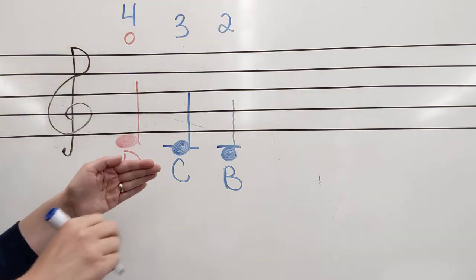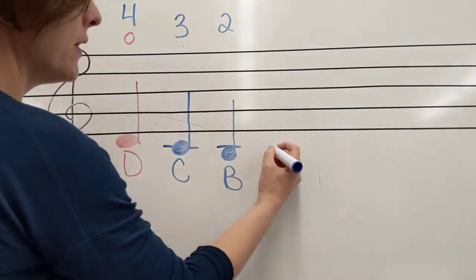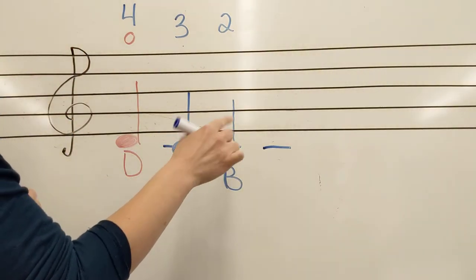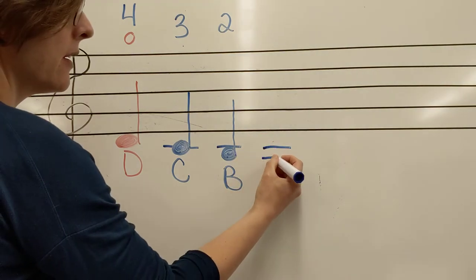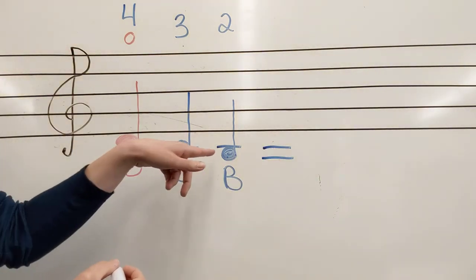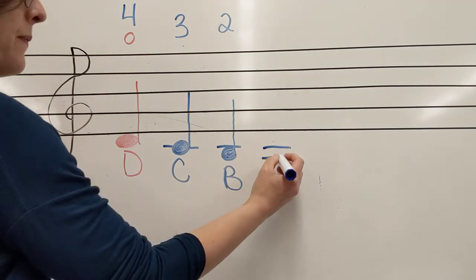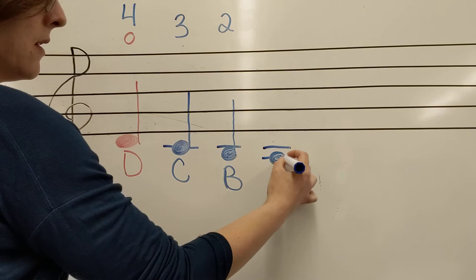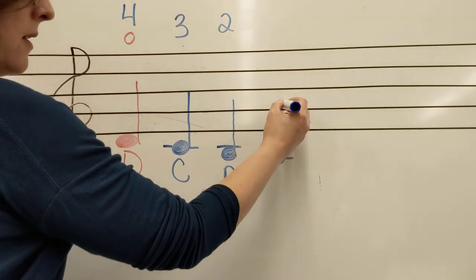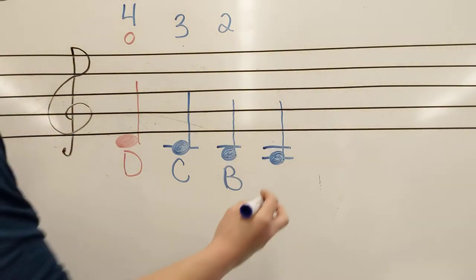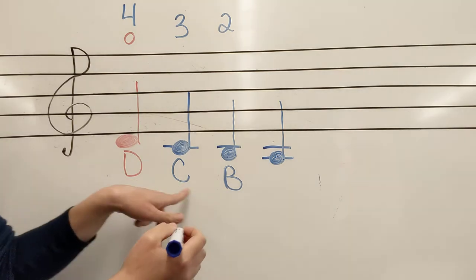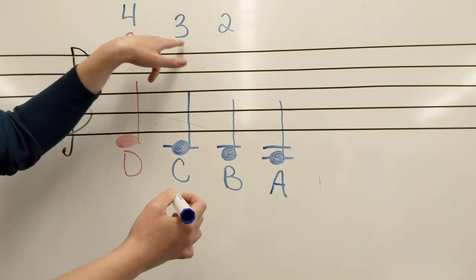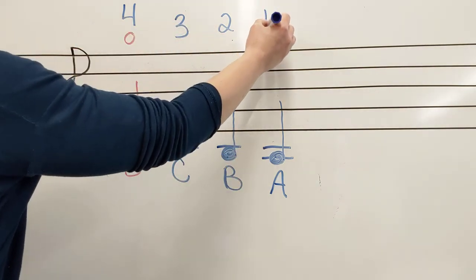All right, so we've drawn one ledger line. We're going to draw it again. Same ledger line that we drew for the C and the B, but now we need to add another below it. This note, we're going from a space note to a line note. Stem is still up and to the right. D, C, B, A. Four, three, two, one.